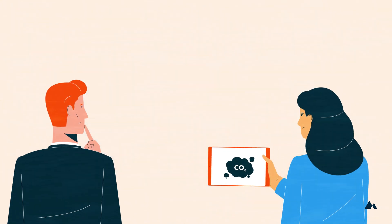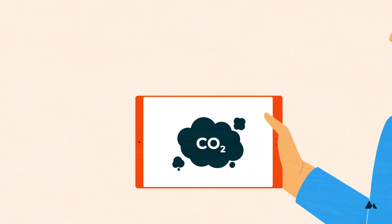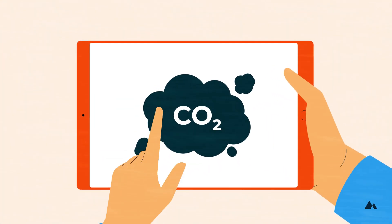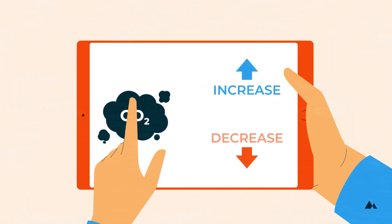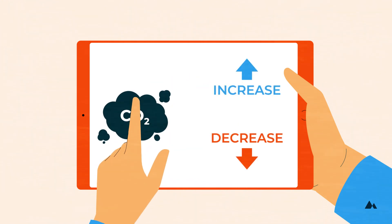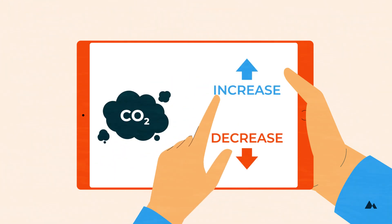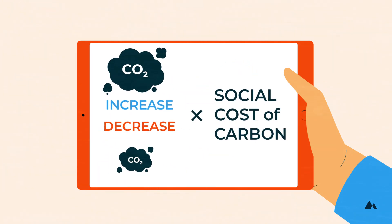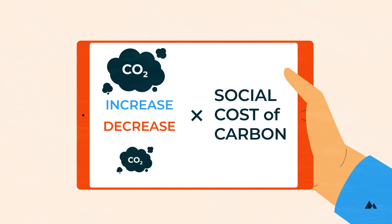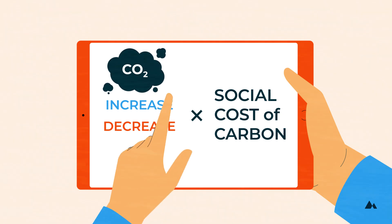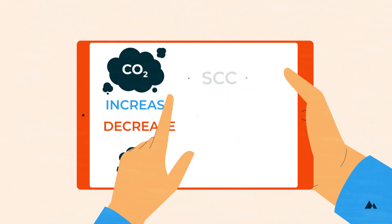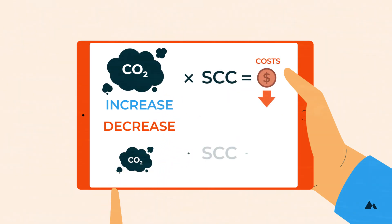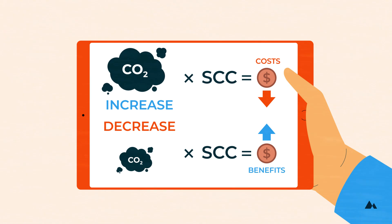For policies that affect greenhouse gas emissions, the expected increase or decrease in emissions in tons is multiplied by the social cost of carbon, and the result is included as part of the total estimated costs or benefits of the policy.